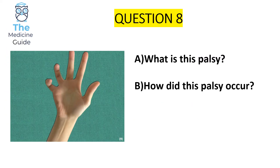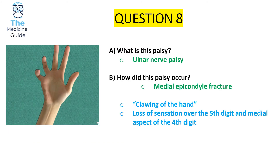This is an example of an ulnar nerve palsy, which classically presents following a medial epicondyle fracture. Patients present with clawing of the hand. There is also a loss of sensation over the fifth digit and the medial aspect of the fourth digit. So the key features are clawing of the hand and sensory loss over the fifth digit and medial fourth digit.